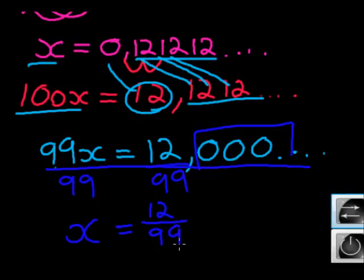We can actually go on. We can simplify this somewhat. 12 over 99. What number do you know goes into 12 and into 99? 3. 3 can divide into 12. 12 divided by 3 is 4.